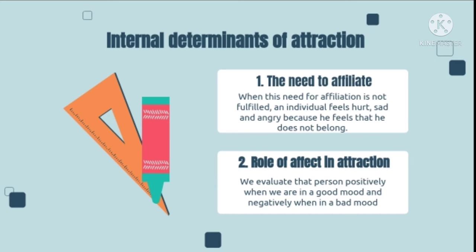The relationship between affect and attraction also has implications for social influence. The attempts at persuasion use the strategy of arousing positive mood states — whether it is advertisers or salespersons who want us to buy a particular product, or politicians who want us to vote for them.